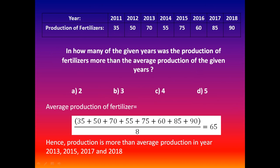The first question is: in how many of the given years was the production of fertilizers more than the average production of the given years? The options are: A) 2, B) 3, C) 4, D) 5. To calculate the answer, we first find the average production: 35 + 50 + 70 + 55 + 75 + 60 + 85 + 90 divided by 8, which equals 65.